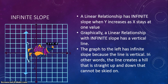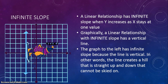Infinite slope happens when y increases as x stays at one value. Graphically, a linear relationship with infinite slope has a vertical line, and the graph to the left has infinite slope because the line is vertical. In other words, it creates a hill that is straight up and down that cannot be skied on — if you try to ski on it, that penguin is going to fall and hit its face on the graph.